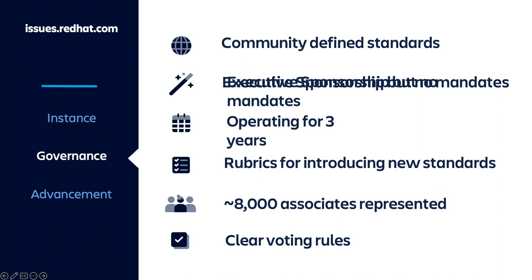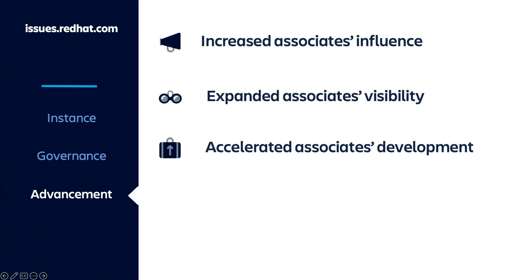Community-defined standards here include executive sponsorship — we've had that, but never a mandate or edict saying we are the authority. It's all community-driven, which is a byproduct of working in an open organization. We use rubrics for introducing new standards. We have about 8,000 associates represented in this governing body through representatives expressing their interests, with clear voting rules. A happy byproduct has been increasing associates' influence and visibility — they're representing large organizations, sometimes hundreds or thousands of people, connected with team leads, architects, and project admins.